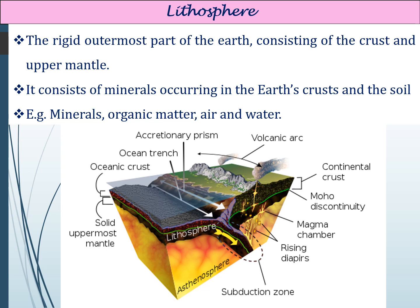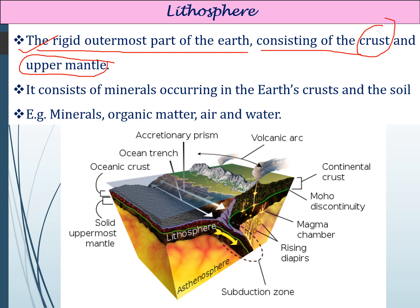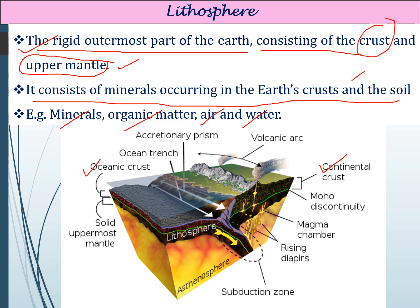The third sphere is the lithosphere — the rigid outermost part of the earth. It consists of the crust as well as the upper mantle part of the earth's interior. The lithosphere includes both the continental crust and the oceanic crust. It consists of the minerals occurring in the earth's crust and the soil — all minerals, organic matter, air, and water that lie on the surface of the earth are part of our lithosphere.